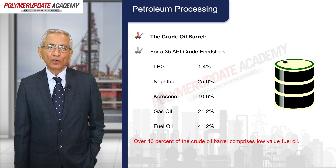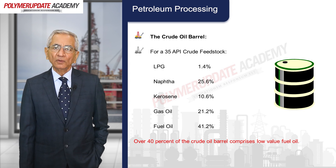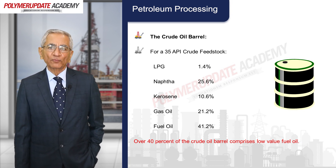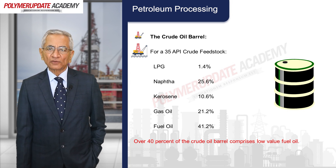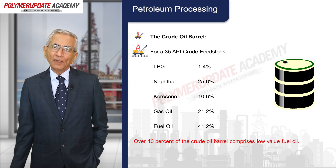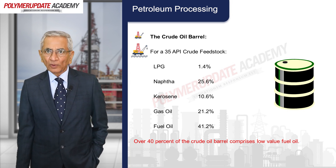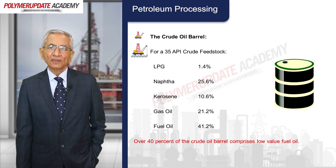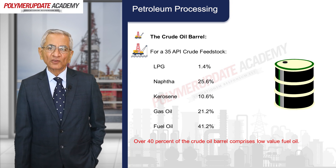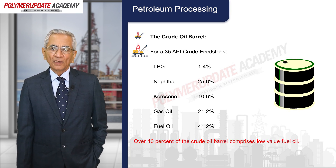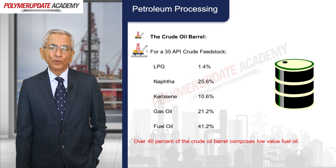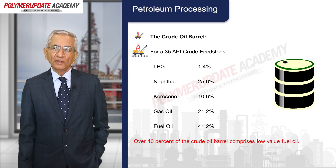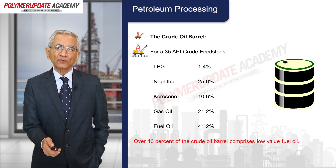For a 35 API crude feedstock, a typical barrel composition is: LPG about 1.4%, naphtha 25.6%, gas oil 21.2%, and fuel oil 41.2%. So basically, crude oil is mainly used for the production of fuels.